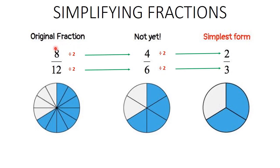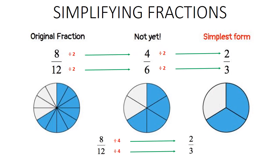We've turned 8 over 12 into 2 over 3 in two steps. But can you do it in one step? Yes — we can take 8 over 12 directly to 2 over 3 by dividing by 4. Divide 8 by 4 to get 2, and divide 12 by 4 to get 3. How is that possible? Because we divided by 2 here and by 2 again there — and 2 times 2 is 4. So dividing by 2 twice is just like dividing by 4 once.